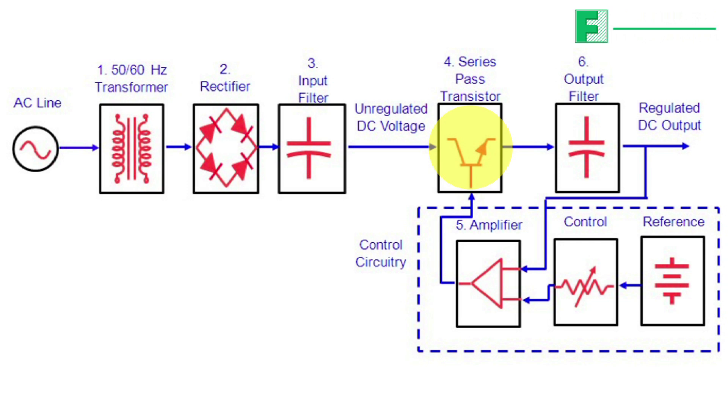Power transistors control the difference between the unregulated DC rail voltage and the regulated output DC voltage. An error amplifier compares the output voltage to a reference in order to regulate the output at the required setting.